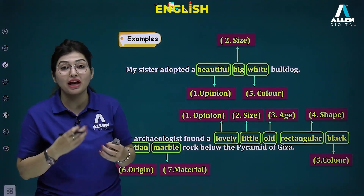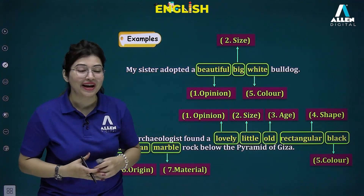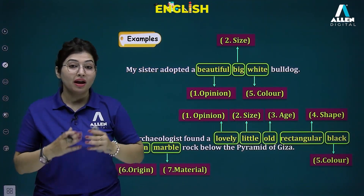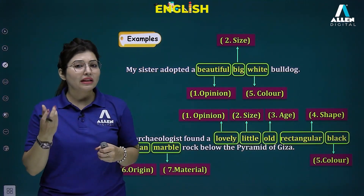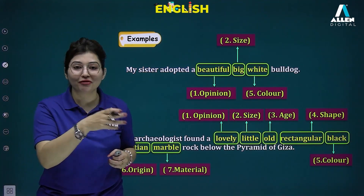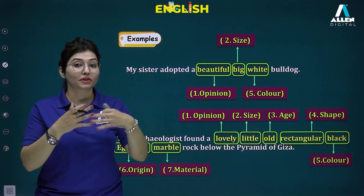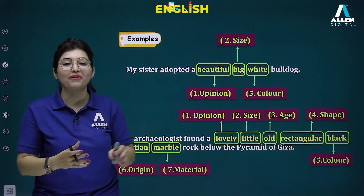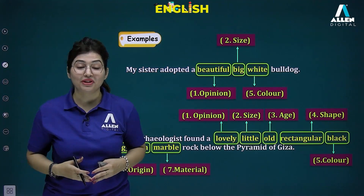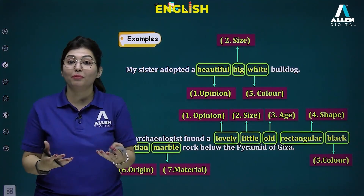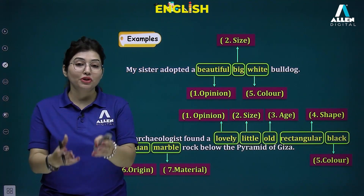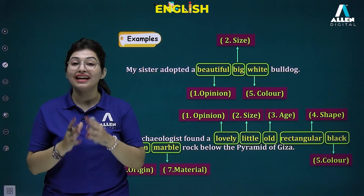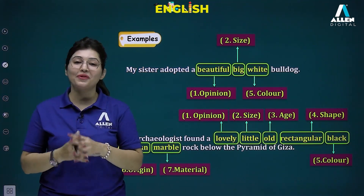To summarize, we started with adjectives as words that modify a noun and give more information about it. We covered types of adjectives, degrees of comparison, and orders of adjectives. I hope you've been able to understand everything and have made notes. Stay happy, stay tuned, and thank you for watching this video.